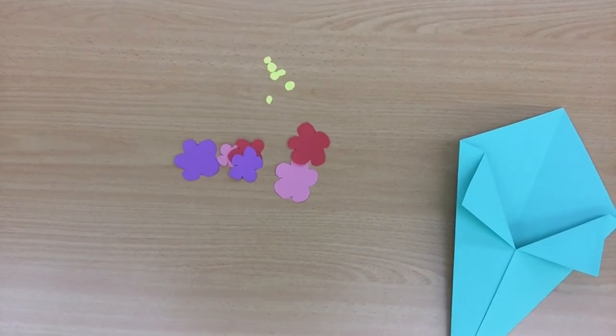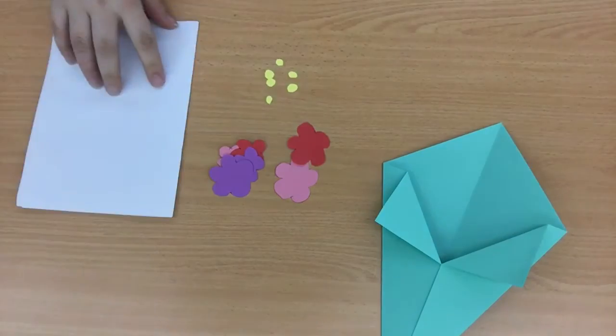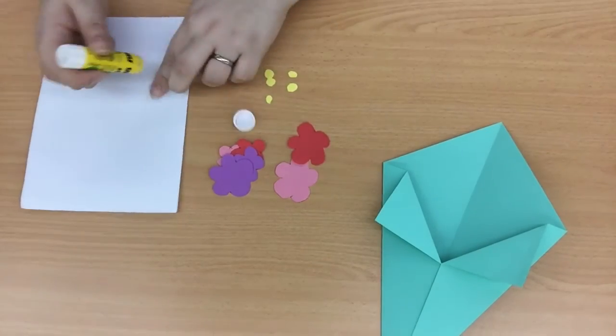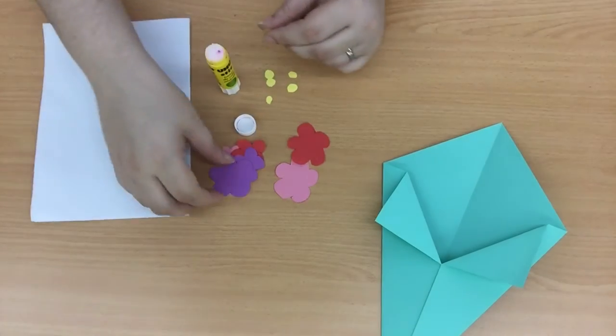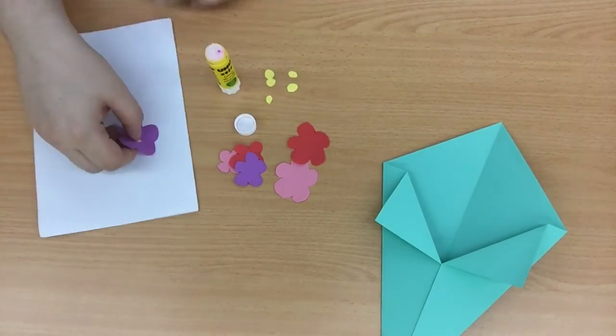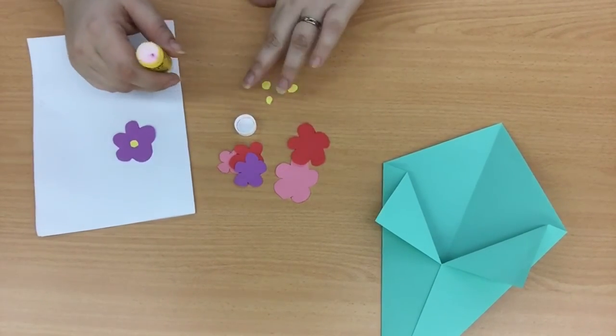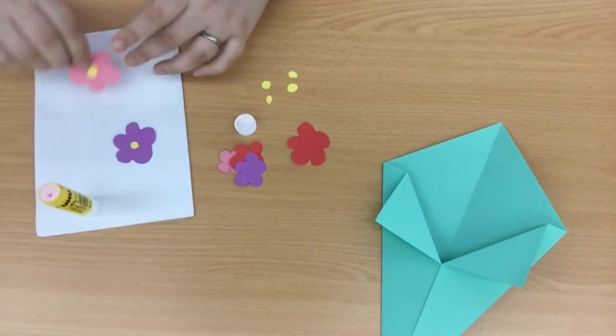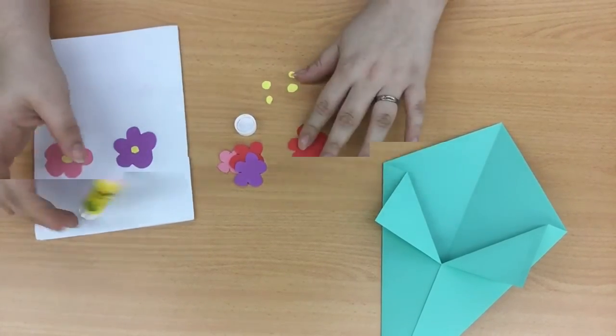Take a scrap piece of paper so you don't get any glue on your table and your glue stick and let's begin. For each flower you need to glue one center. Now because they're so small they might get stuck on your glue stick, that's okay just use your fingers to lift them off.